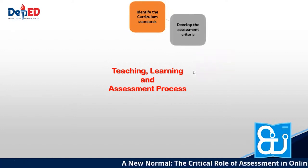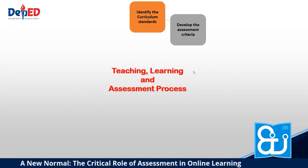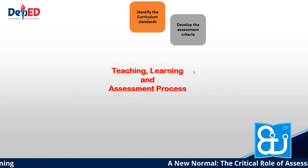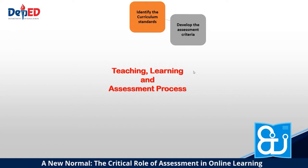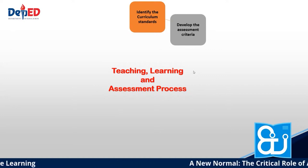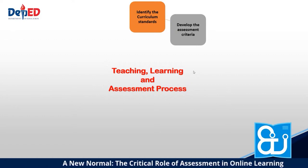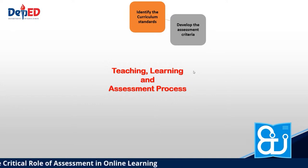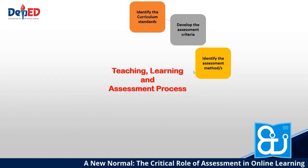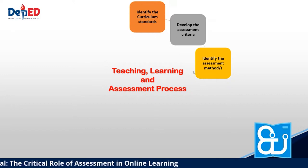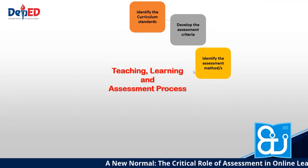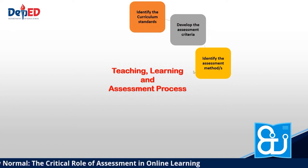Step two is to develop the assessment criteria. We need to analyze the competencies to be assessed and unpack or expand them so that students are assessed on a specific topic. Some competencies are congested, so we need to unpack them. Step three is identifying the assessment method—it is very important to identify which assessment method will give learners the best chance to demonstrate their learning. Is it observation, talking to learners, analyzing the product they make, or a test? We have plenty of assessment methods; let us take into consideration what is applicable to our learners.